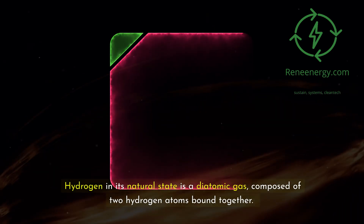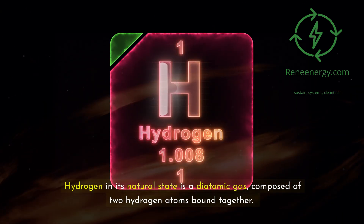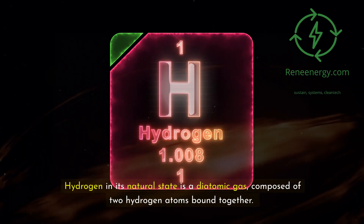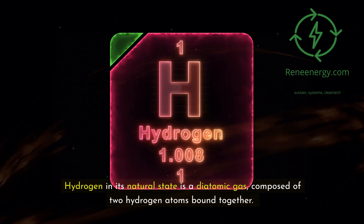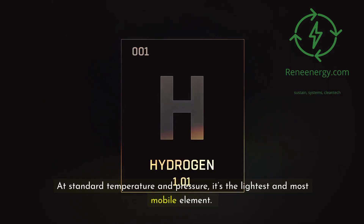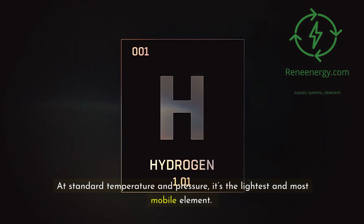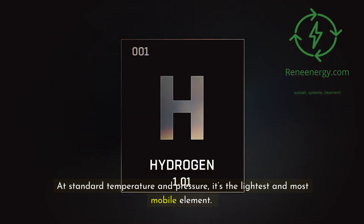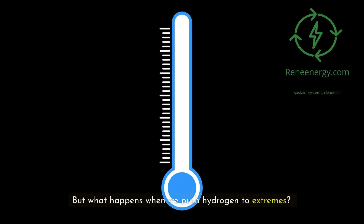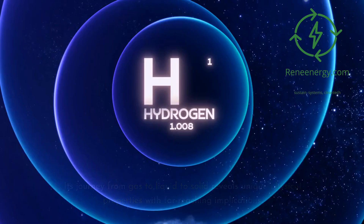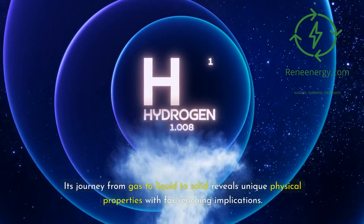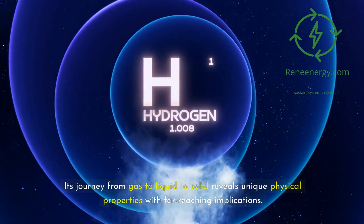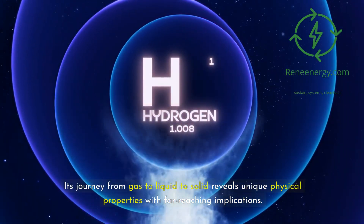Hydrogen in its natural state is a diatomic gas, composed of two hydrogen atoms bound together. At standard temperature and pressure, it's the lightest and most mobile element. But what happens when we push hydrogen to extremes? Its journey from gas to liquid to solid reveals unique physical properties with far-reaching implications.